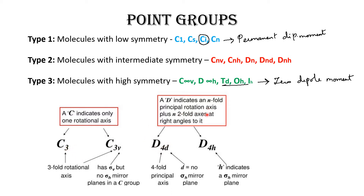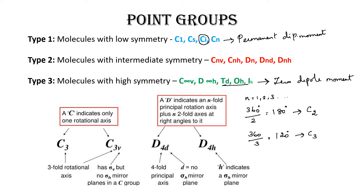2-fold means C2, and 3-fold means C3. If N = 2, then 360° ÷ 2 = 180°, giving C2 rotation axis. If 360° ÷ 3 = 120°, that is C3 axial rotation. If it is 4, then 90°, giving C4 axis. We keep going in this way.